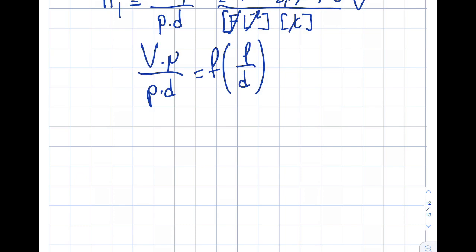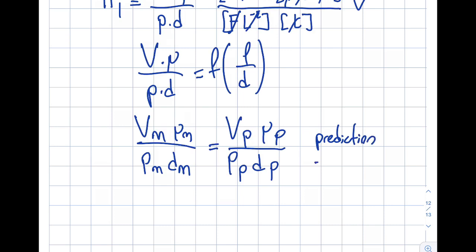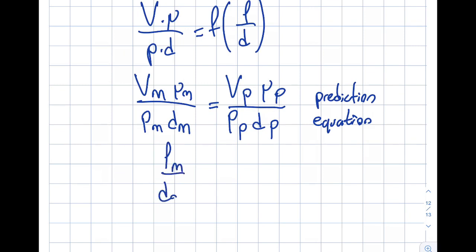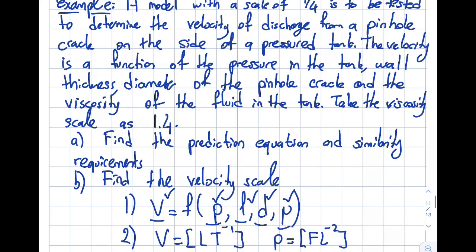V times viscosity divided by P times D will be a function of L over D is how we should represent this. You can see if I write my prediction equation, it's going to look like this: Vm times viscosity_m divided by Pm times Dm will be equal to V_prototype times viscosity_prototype divided by P_prototype times D_prototype. This will be my prediction equation. The similarity requirement will be Lm over Dm equals Lp over Dp, and this is basically geometric similarity. So this is the similarity requirement. So now I finished part A of the question, because part A was asking me to find the similarity requirement and prediction equation. So I'm good to go there.